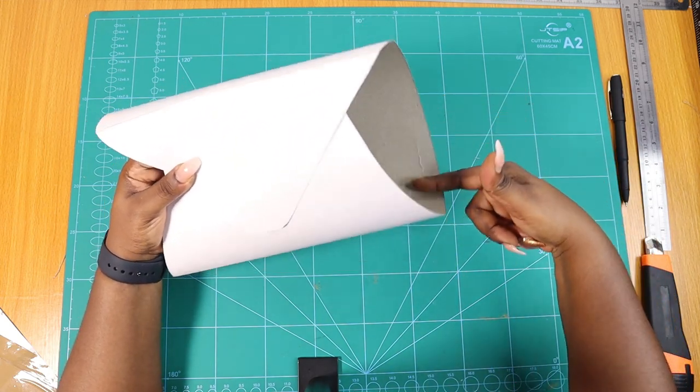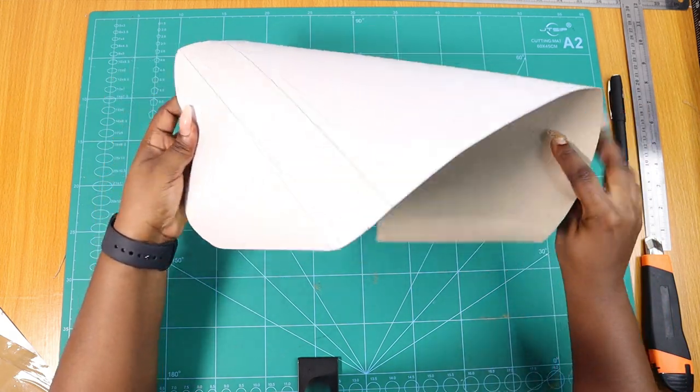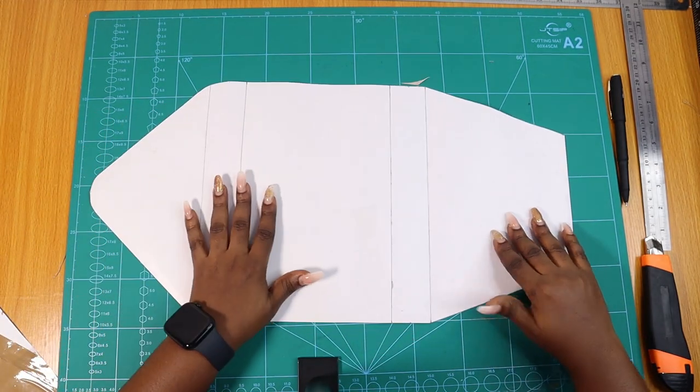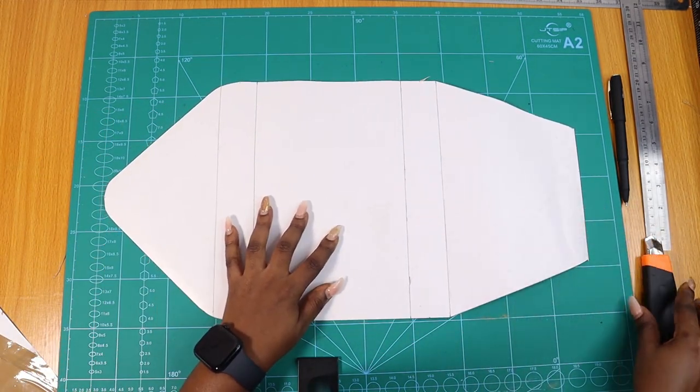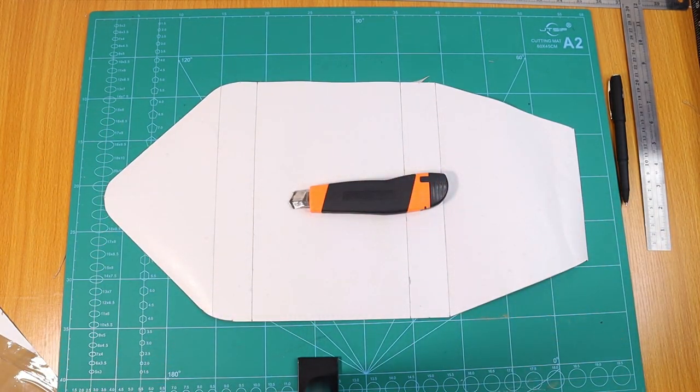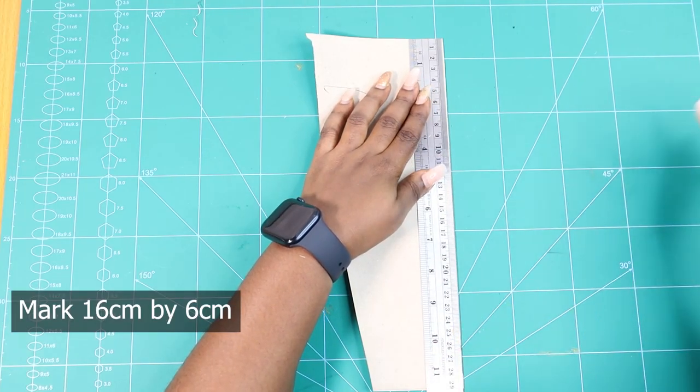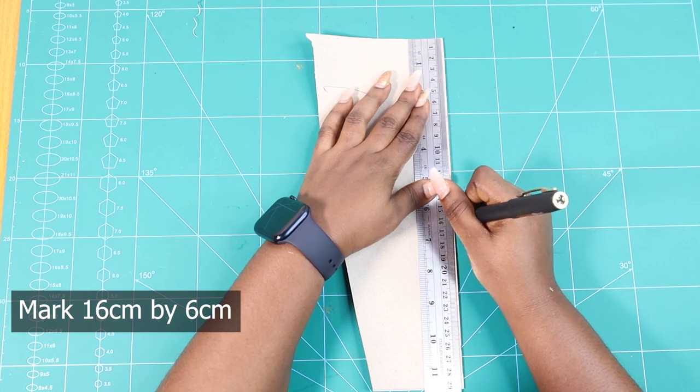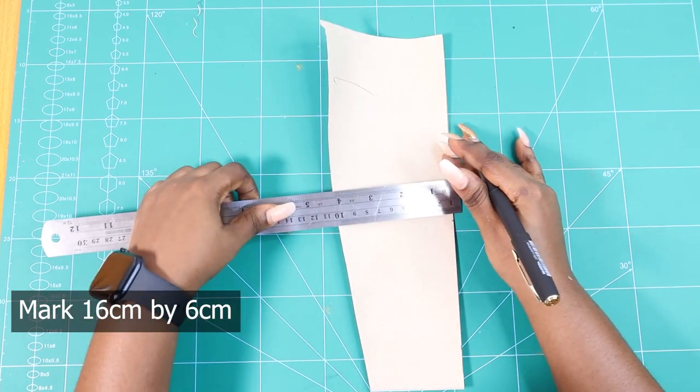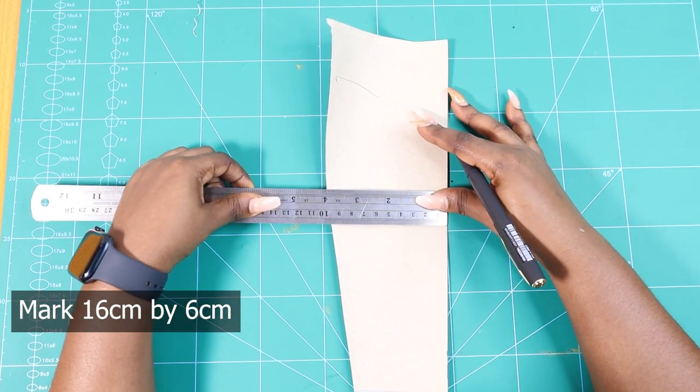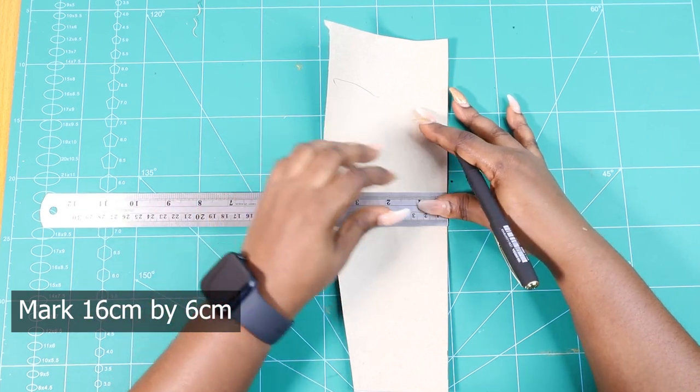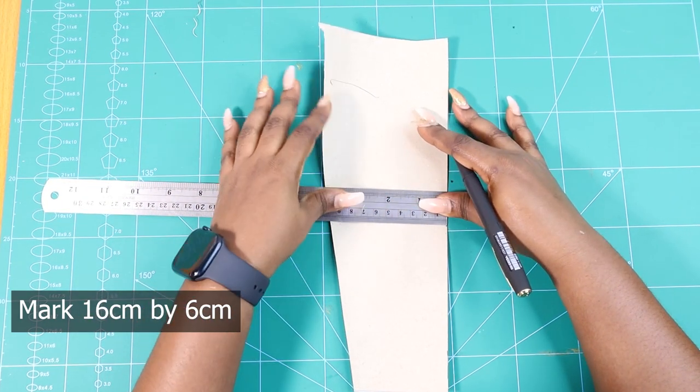Now the easy part is over. It's time to get into the difficult part. Now we're done with the main piece. We're going to move to the sides, basically the gussets. We're starting by marking out 16 by 6 centimeters. The 6 centimeters is going to be the lower parts. I tried other measurements before, and this was when it seemed to work out.